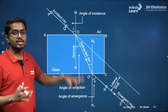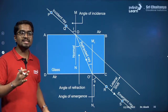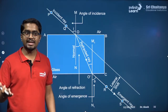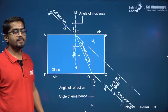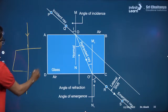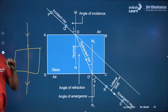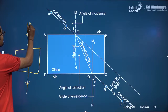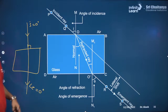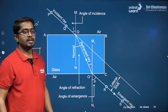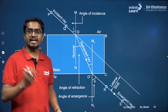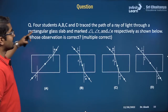After every class, whatever we have covered will be converted into a PDF and shared in the Telegram channel. You will also get questions based on today's topics there. If light falls perpendicular to the slab, the angle of incidence is 0, so angle of emergence is also 0, meaning light passes through without any deviation.